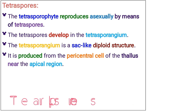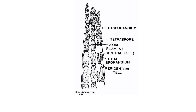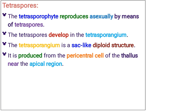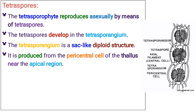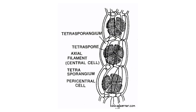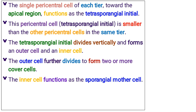The tetrasporophyte is a free-living, diploid plant. It is morphologically similar to the gametophytic plants but does not bear sex organs. The tetrasporophyte reproduces asexually by means of tetraspores. The tetraspores develop in the tetrasporangium of the tetrasporophyte. The tetrasporangium is a sac-like diploid structure produced from the pericentral cell of the thallus near the apical region. The single pericentral cell of each tier toward the apical region functions as the tetrasporangial initial.